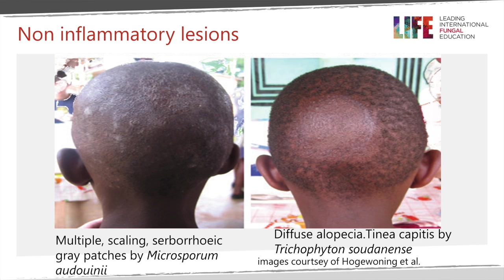Looking at these two pictures: to the left of your screen are multiple scaling seborrhoeic gray patches all over the head — at the occiput and parietal regions — caused by the dermatophyte Microsporum audouinii. To the right of your screen is one big diffuse patch of alopecia at the occiput area with no satellite lesions elsewhere. This was Tinea Capitis caused by Trichophyton soudanense.